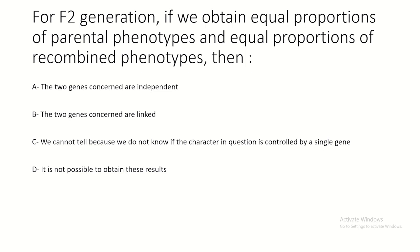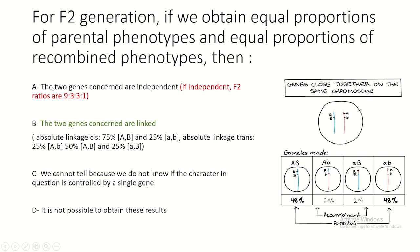For F2 generation, if we obtain equal proportions of parental phenotypes and equal proportions of recombined phenotypes, this means the two genes are linked with crossing over occurring - giving two groups where recombinant percentages are nearly equal to each other and parental percentages are nearly equal to each other, with a large difference between parental and recombinant proportions. The answer is B.